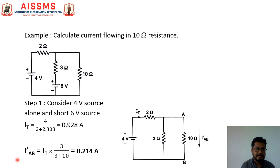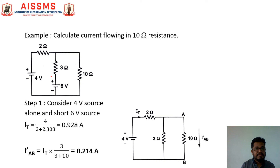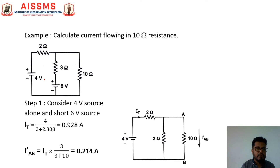Now let us find the current flowing through the 10 ohm resistance in the given network. Observe this network carefully. There are two voltage sources, with 4 ohm and 6 ohm resistances, and we have to find out the current flowing through this 10 ohm resistance. Let this branch be the AB branch. In the first step, let us consider the 4 volt source acting alone.